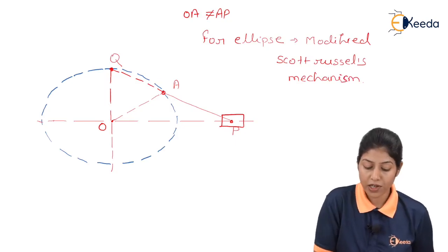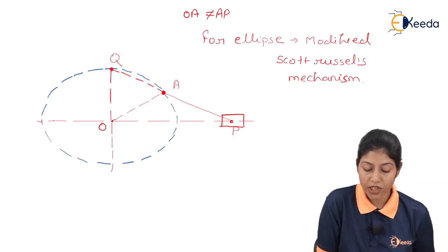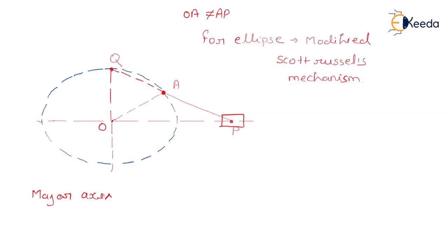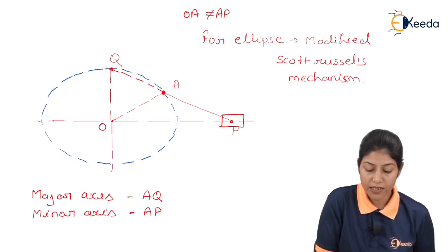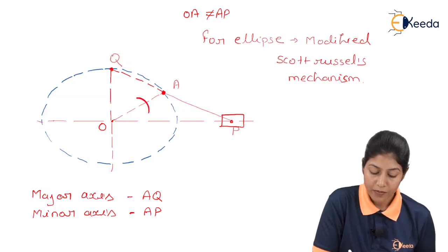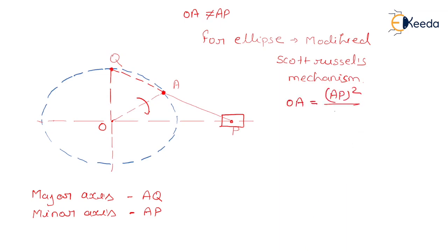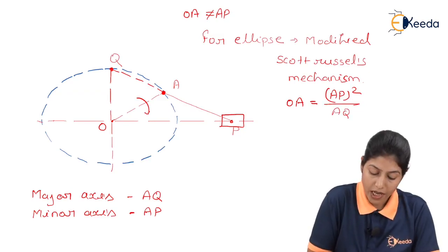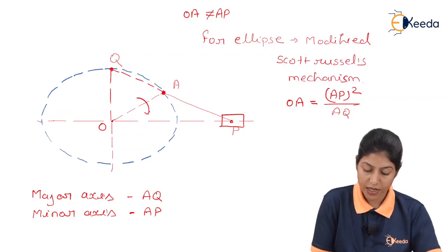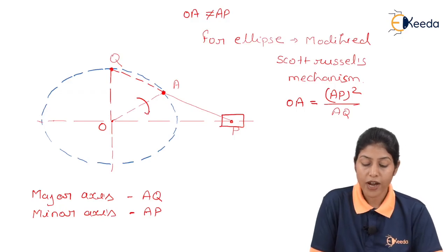Basically, this modified Scott-Russell mechanism is generally used to form an elliptical trammel or to form an elliptical path with the help of point A, where the major axis is considered as AQ. With the help of major axis AQ and minor axis, we can define the ellipse through the motion of point A with rotation of crank OA. AO length can be defined as AO = AP² / AQ when point A is forming one ellipse.